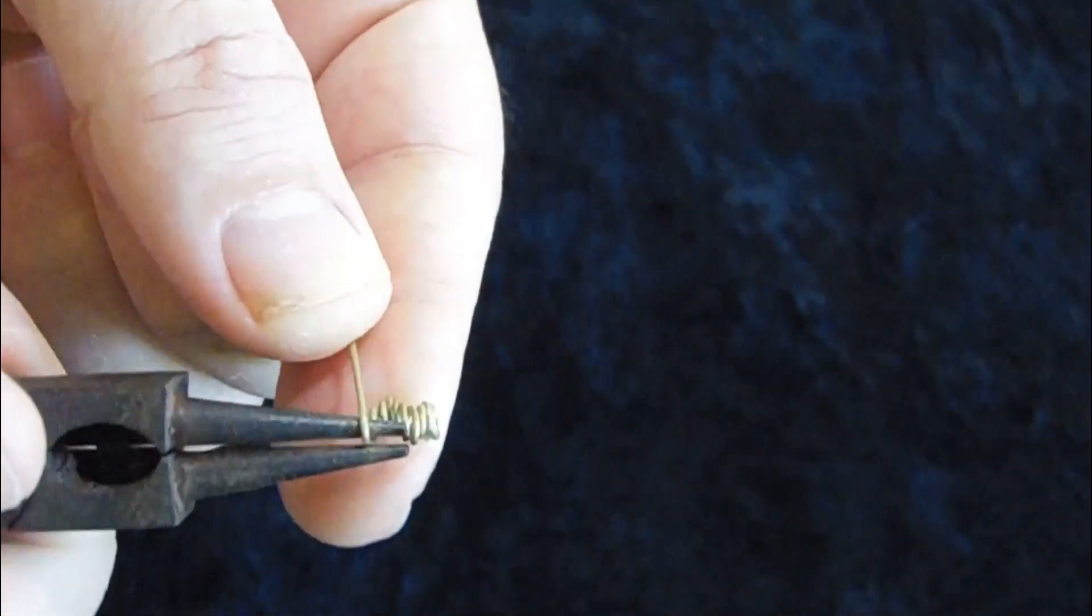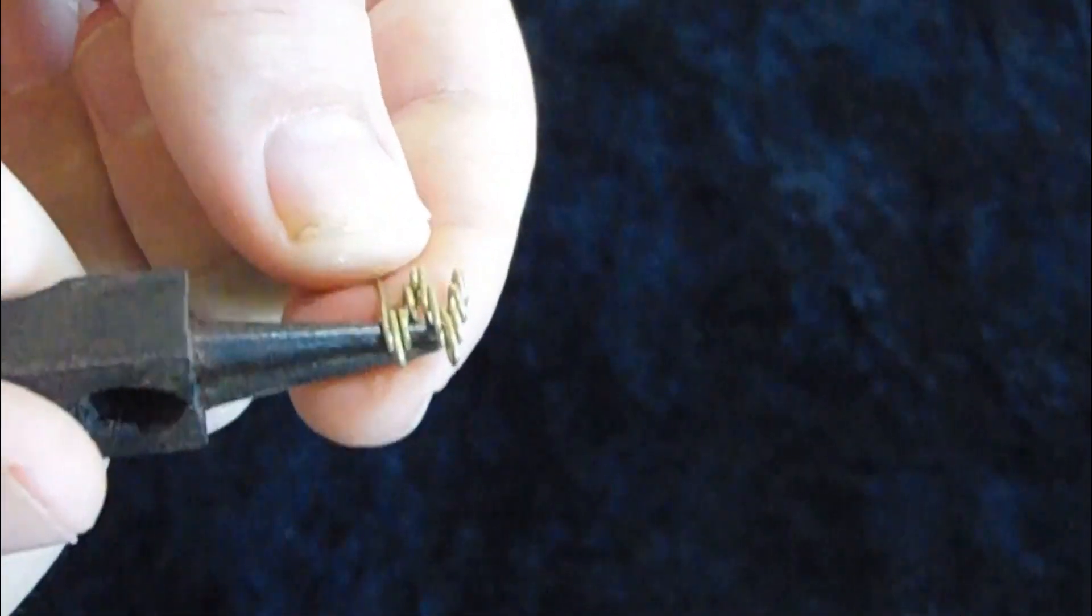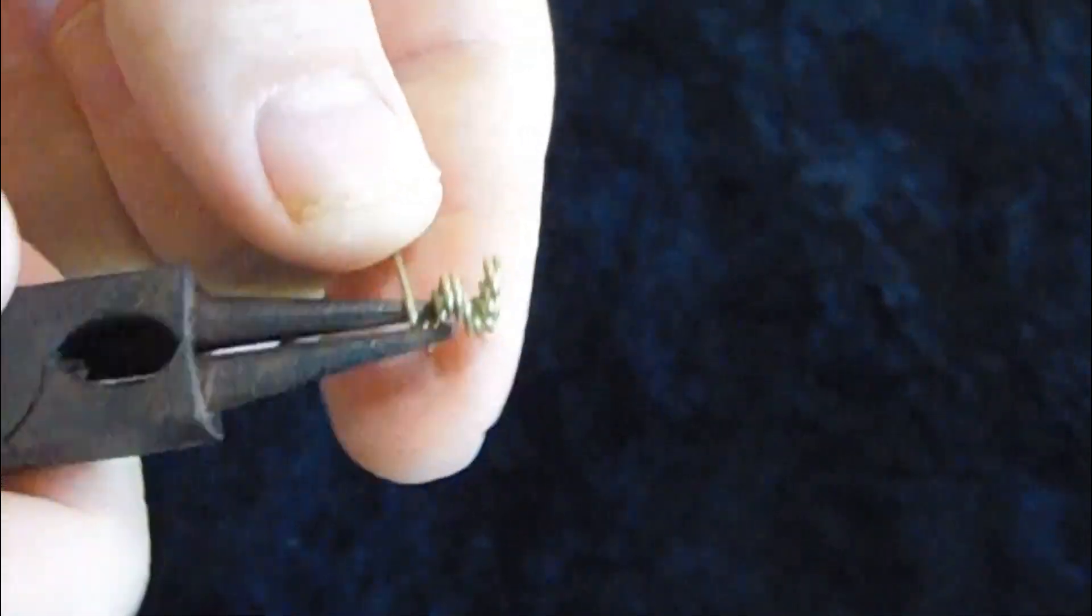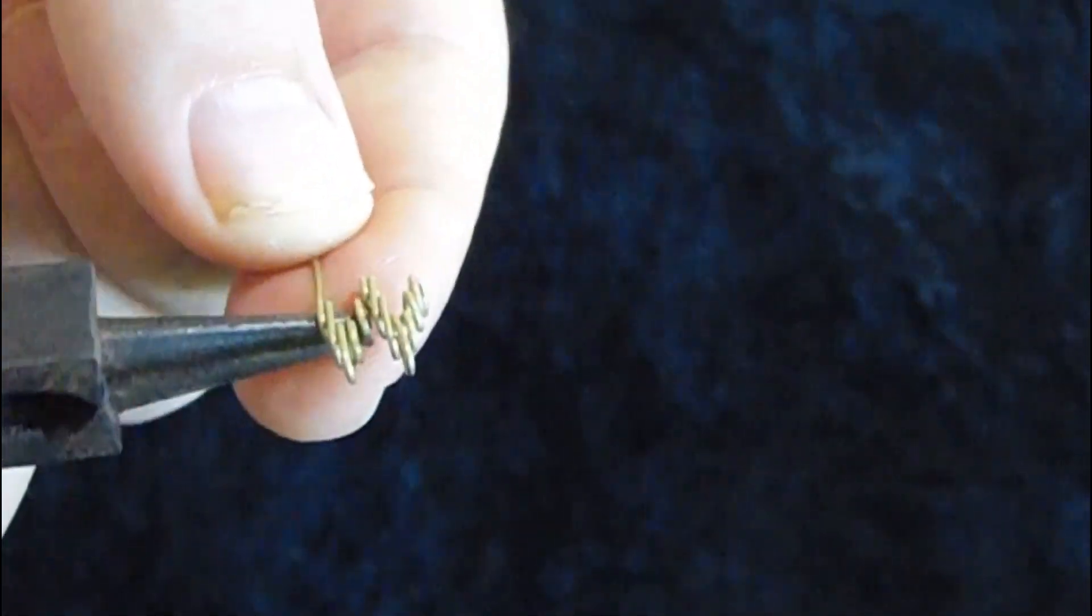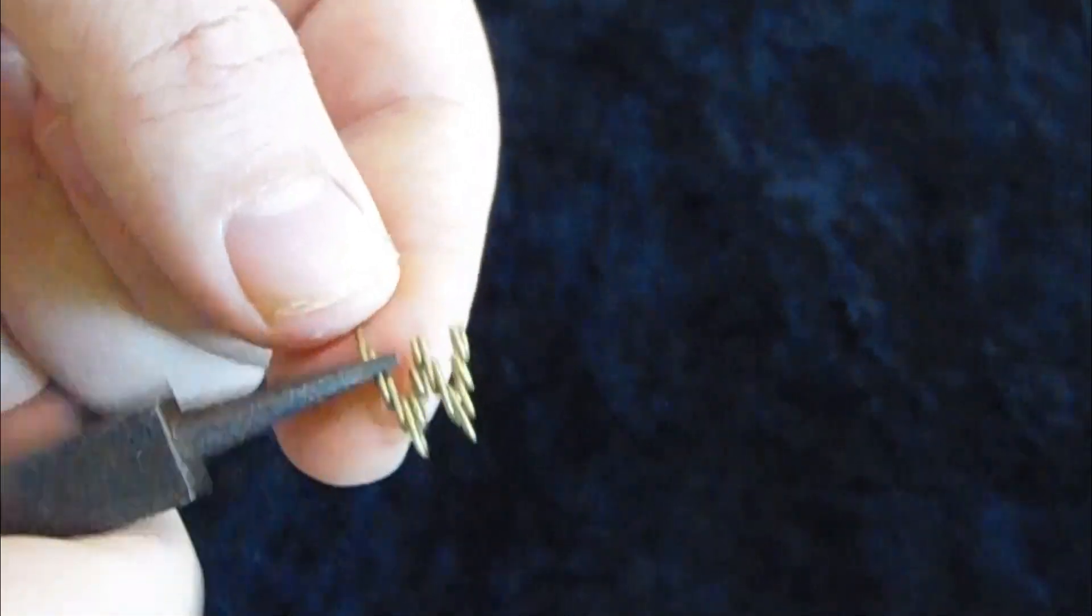As in my previous tutorials, I'm using 22-gauge brass wire for the sunweave pattern. Additionally, for securing the gemstone, I'll be using approximately 2 inches of 26-gauge wire, which is perfect for this purpose.